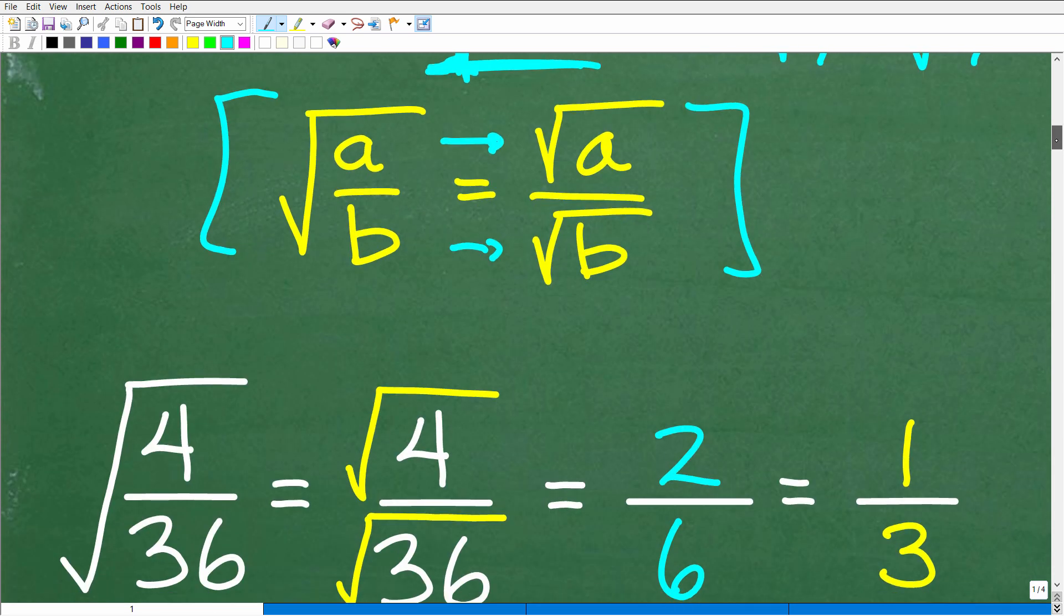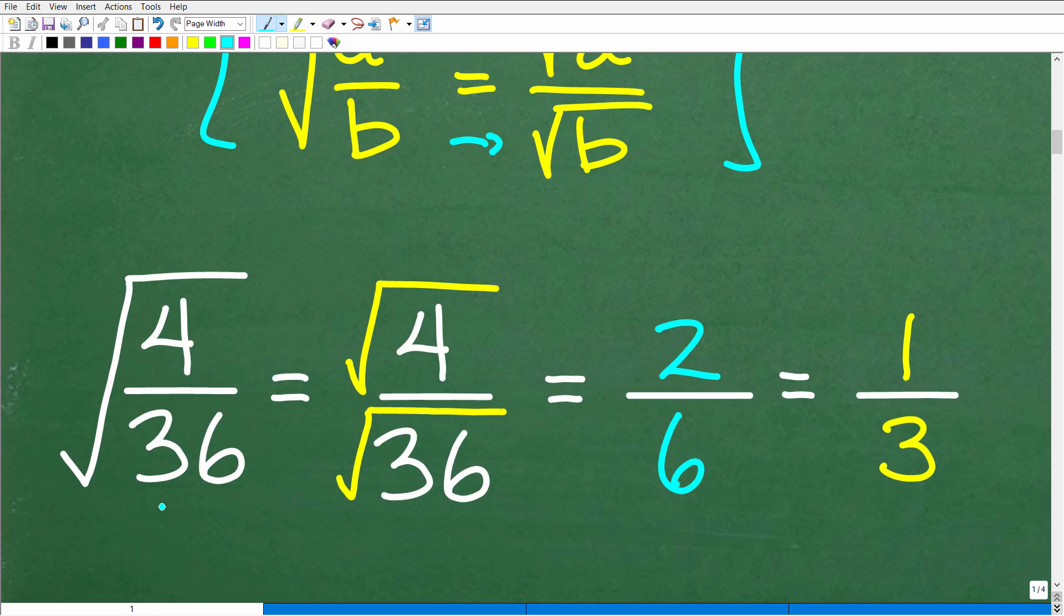All right, let's go ahead and actually do the problem now. So here I have the square root of 4 over 36. So we'll use this property and we'll break up this one big square root into two small square roots. So now I have the square root of 4, which, of course, is 2. Hopefully, you know why.